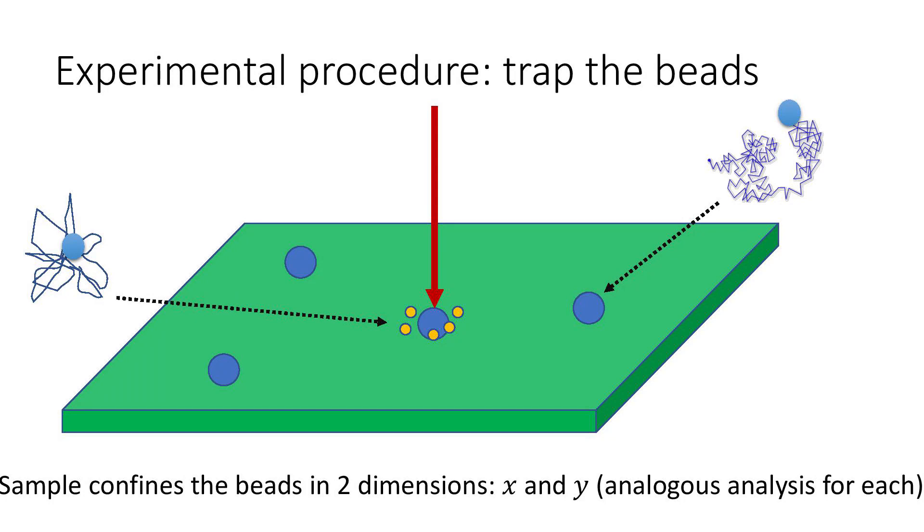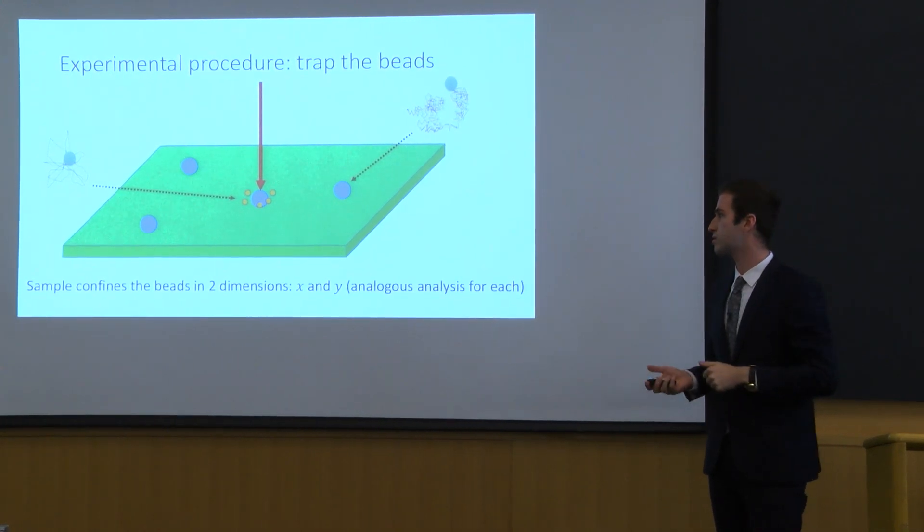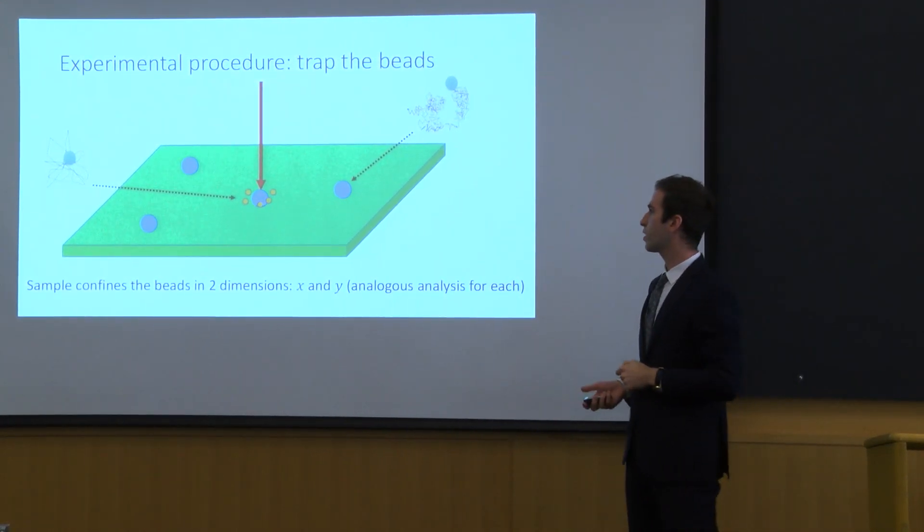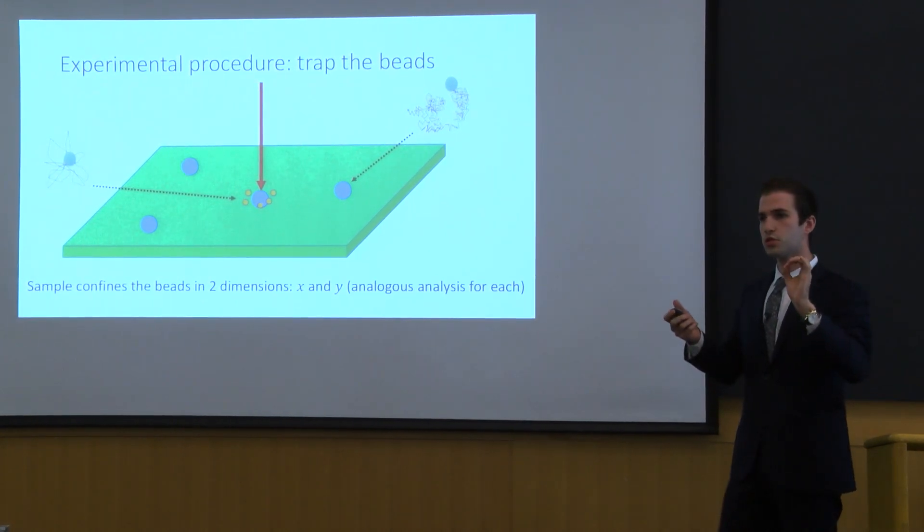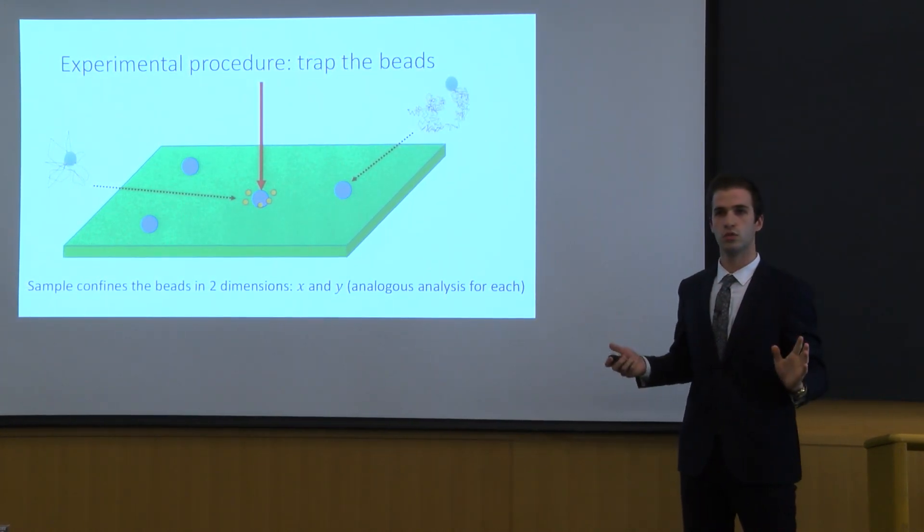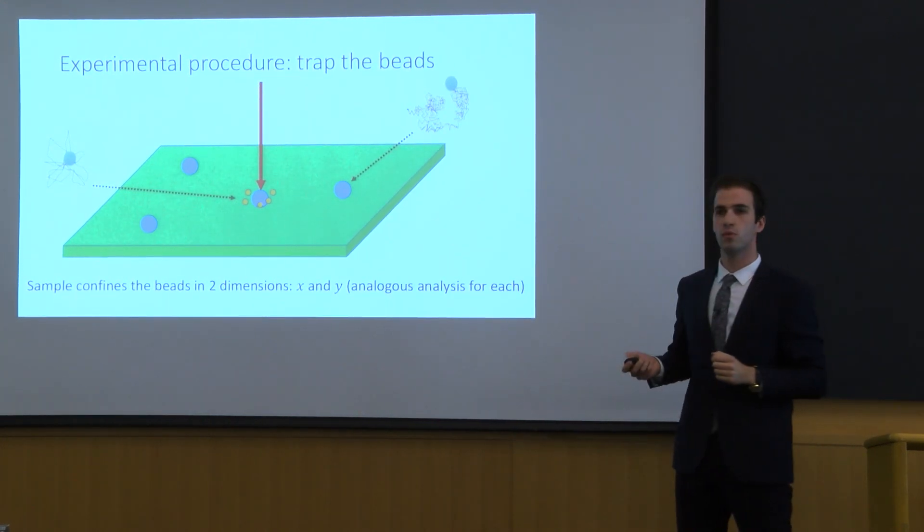In a more concrete example, what we did is we took samples and we confined everything into a two-dimensional plane. This is very important. We have two directions, the x-direction and the y-direction for the beads. We put them into water and the source of Brownian motion comes from the collisions between our bead with the molecules into the water. These are thermal collisions that generate Brownian motion.